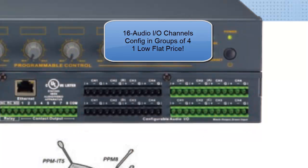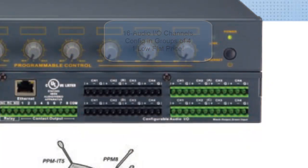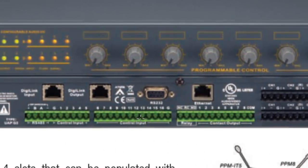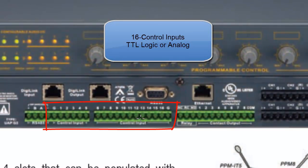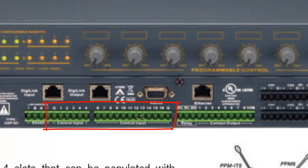Other hardware features on the UAP include 16 control inputs built right into the box. These inputs are field-configurable in the software to be TTL logic, with 0 to 5 volt DC trigger inputs. They can be configured normally open or normally closed, and can also be configured for analog so you can use 10k analog controls or variable resistor controls.